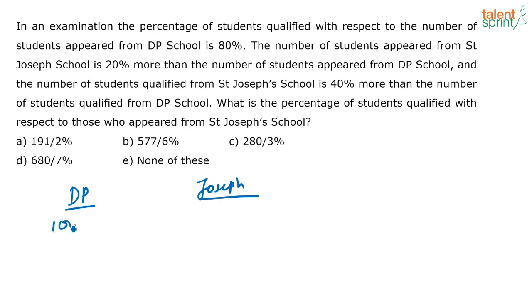So, if 100 students have appeared, how many students have qualified? 80% of the students have qualified, or I can say 80 students have qualified. So how many disqualified? 20. Okay, let us keep that there.